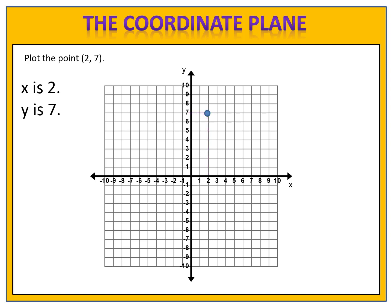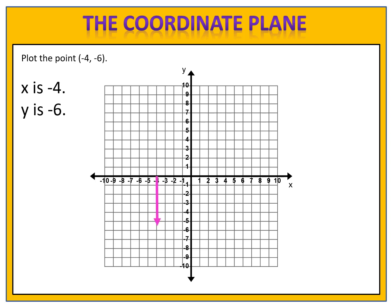Here's one for you to try. We want to plot the point negative 4 comma negative 6. Go to the negative 4 on the x-axis and the negative 6 on the y-axis, plot that point, and come back and let's see how you did. We know that x is negative 4, so we begin on our x-axis at negative 4. We know that y is negative 6, so we go down to negative 6 on the y-axis and we find the point where those intersect. That intersection is where we plot our point, negative 4 comma negative 6.